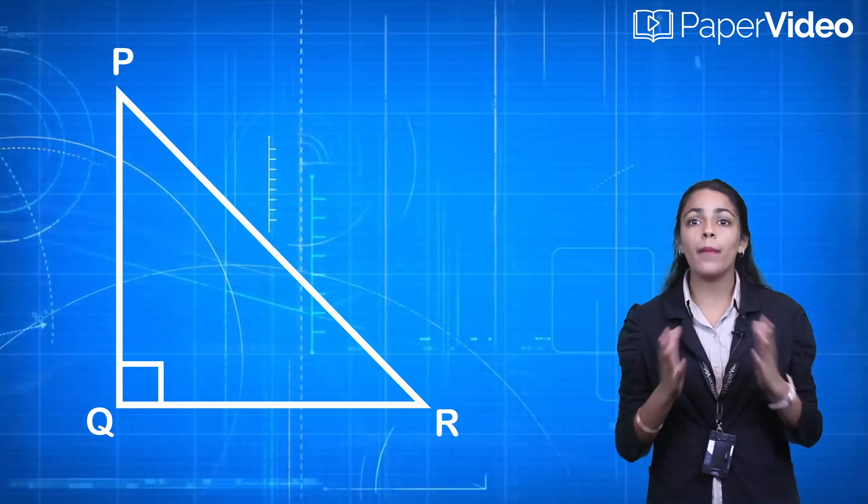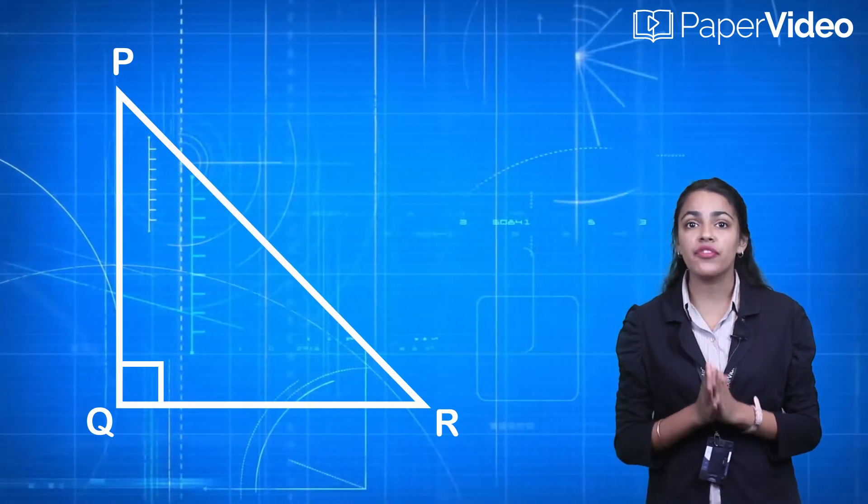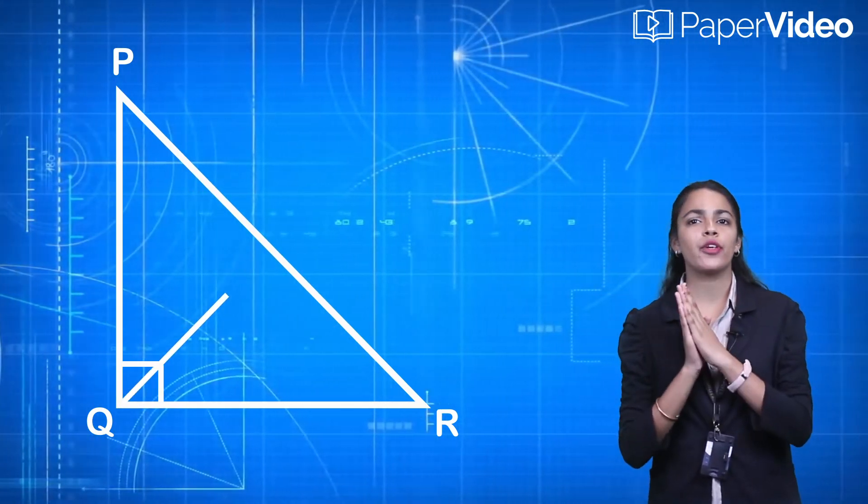Let us draw a perpendicular QS from vertex Q to the hypotenuse PR.